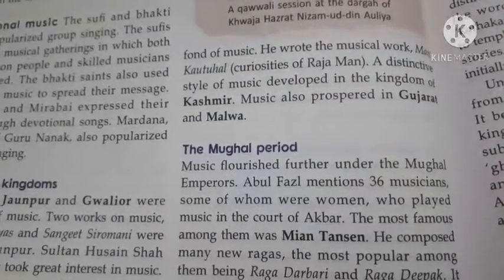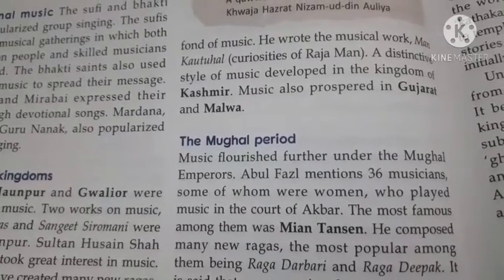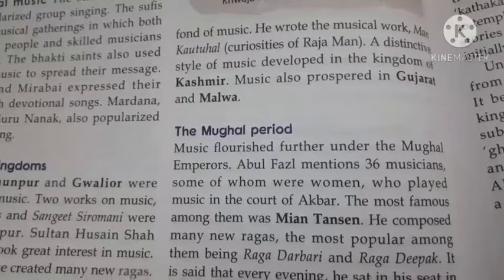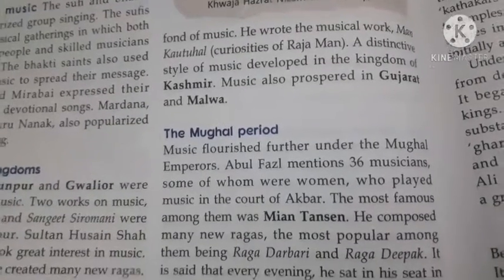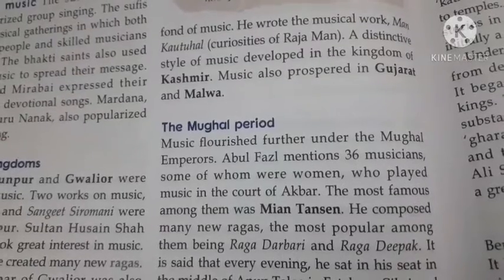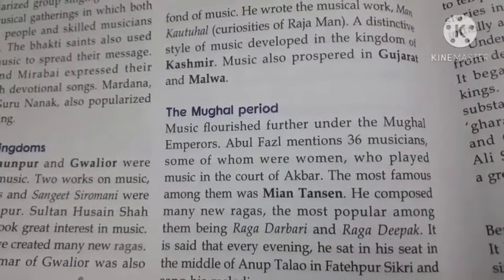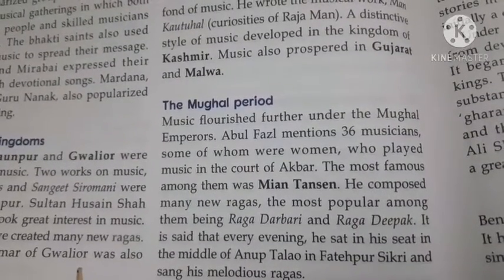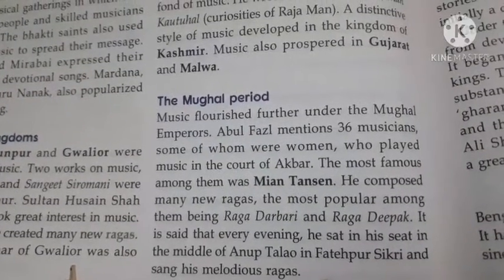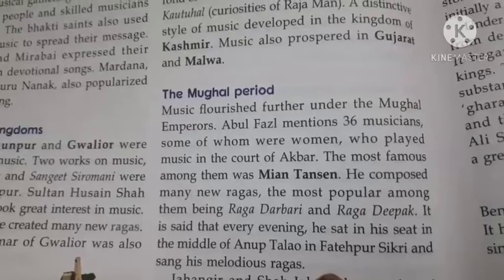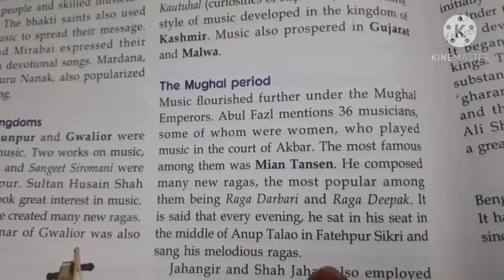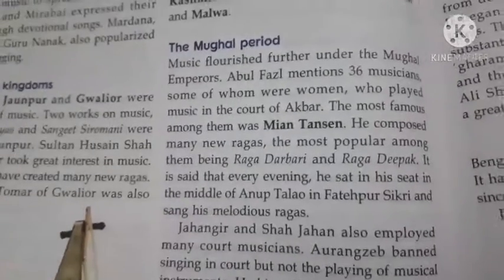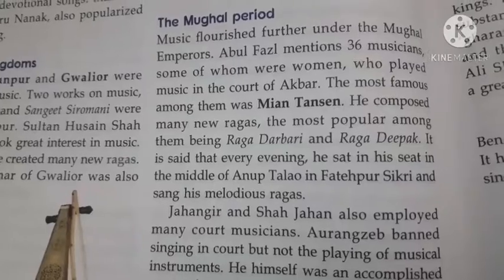Next is the Mughal period. Music flourished further under the Mughal emperors. Abdul Fazal mentioned 36 musicians, some of whom were women, who played music in the court of Akbar. The most famous among them was Tansen. He composed many new ragas, the most popular being Raag Darbari and Raag Deepak. He is said to have sung melodious ragas each evening at the Anup Talao in Fatehpur Sikri. Jahangir and Shah Jahan also employed many court musicians.